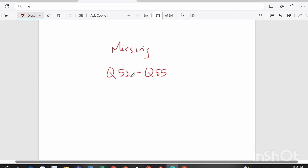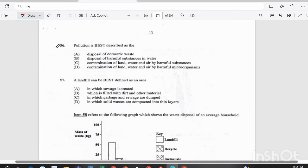We are also missing questions 52 to 55 on this paper. Question 56. Pollution is best described as the A. Disposal of domestic waste. B. Disposal of harmful substances in water. C. Contamination of land, water, and air by harmful substances. Or D. Contamination of land, water, and air by harmful microorganisms. The answer there is C. Contamination of land, water, and air by harmful substances.